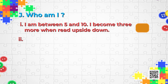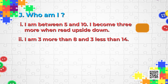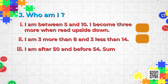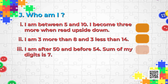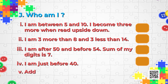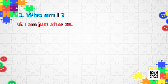The second sub-question: I am three more than eight and three less than fourteen. The next one: I am after fifty and before fifty-four, and the sum of my digits is seven. The next one: I am just before forty. And another: add five to me and you will get twenty-four.